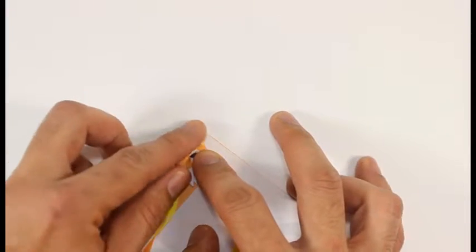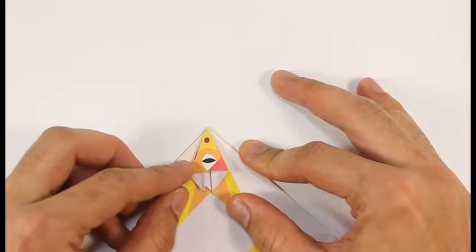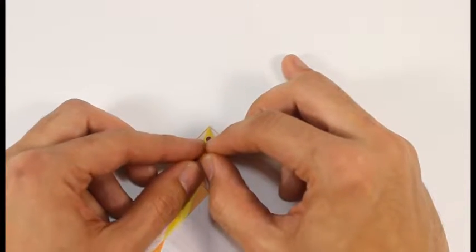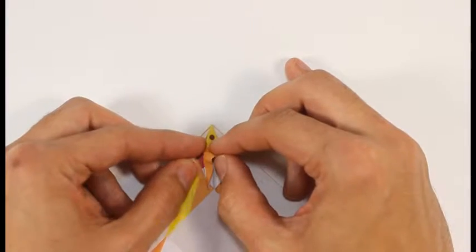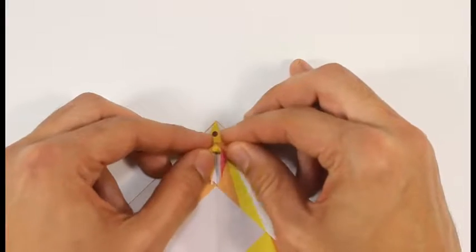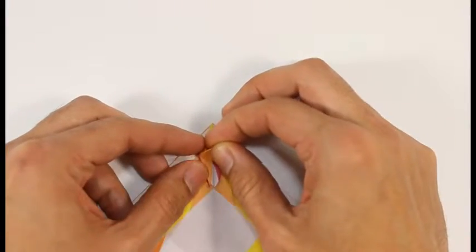We call this sequence a frog fold. Now swivel fold upwards and fold the bottom portions in half.